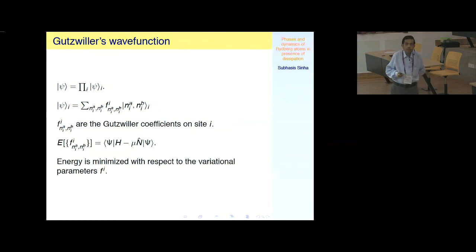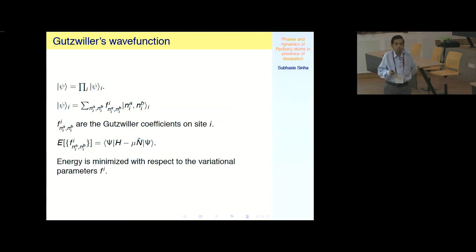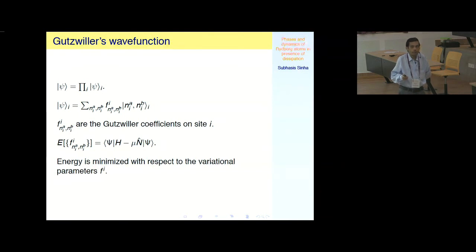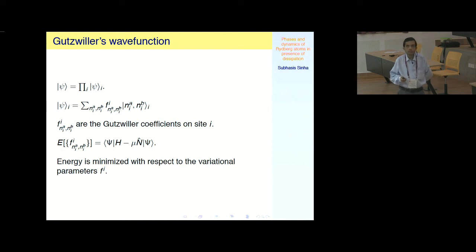This model is analyzed with a Gutzwiller-like mean-field variational wave function — a bosonic-type Gutzwiller wave function. The total wave function is decomposed into a product state of each site's wave function. Each site's wave function is written as a linear combination of number states: NiA is the number of atoms in the ground state, and NiB is the number in the excited state, restricted to zero or one. The Gutzwiller amplitudes f_i are found by minimizing the energy expectation value of H minus mu*N, giving the different phases.